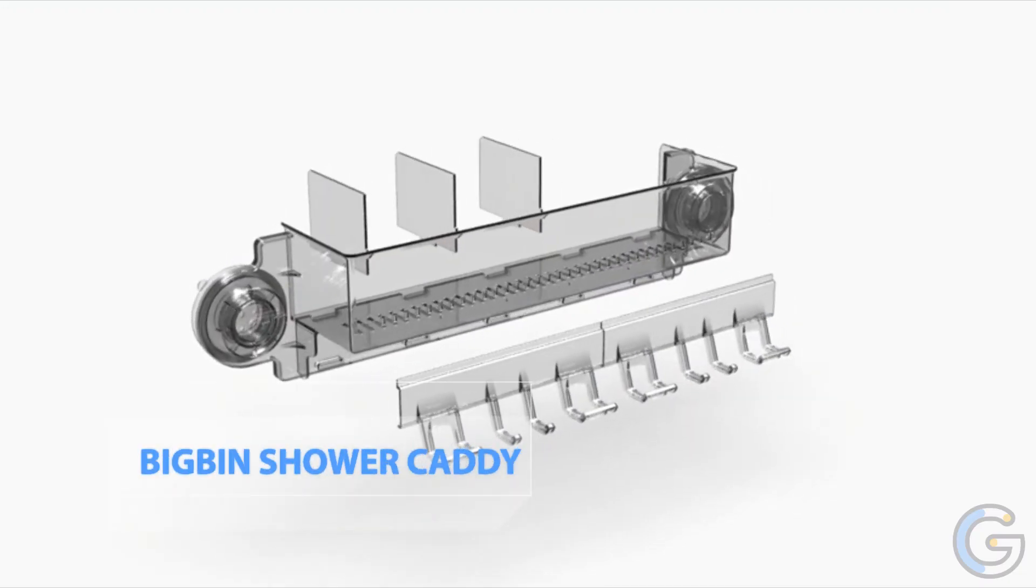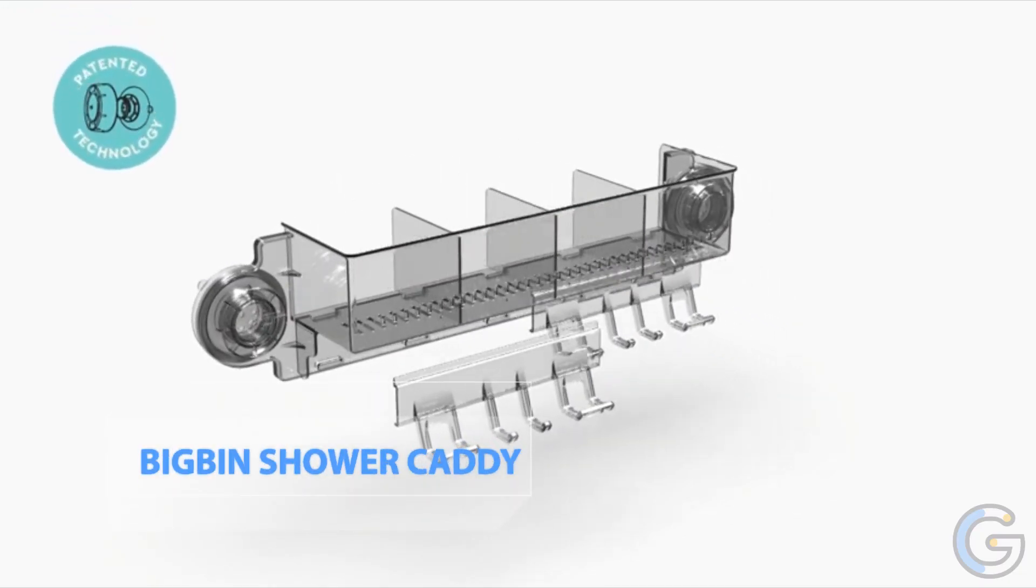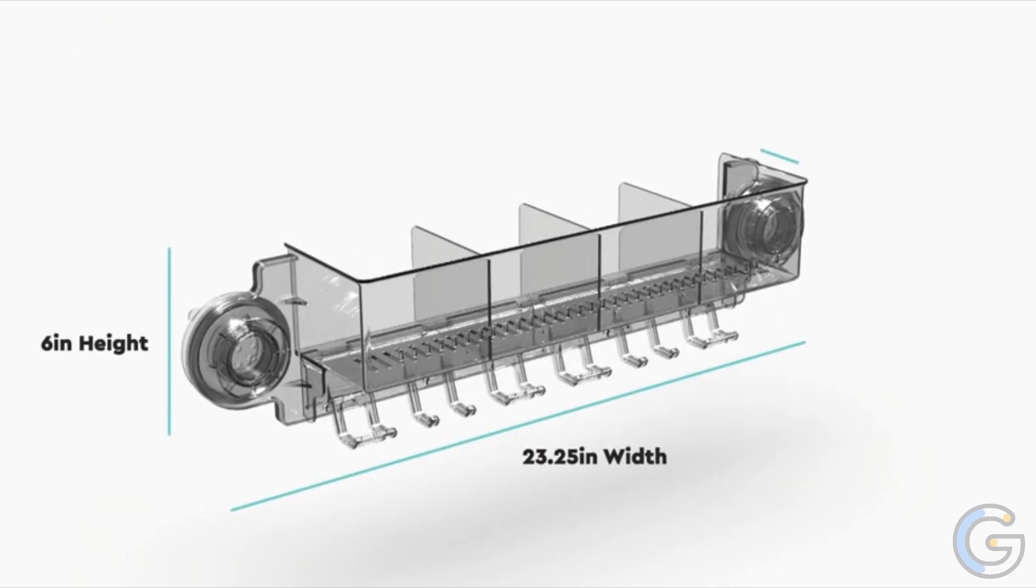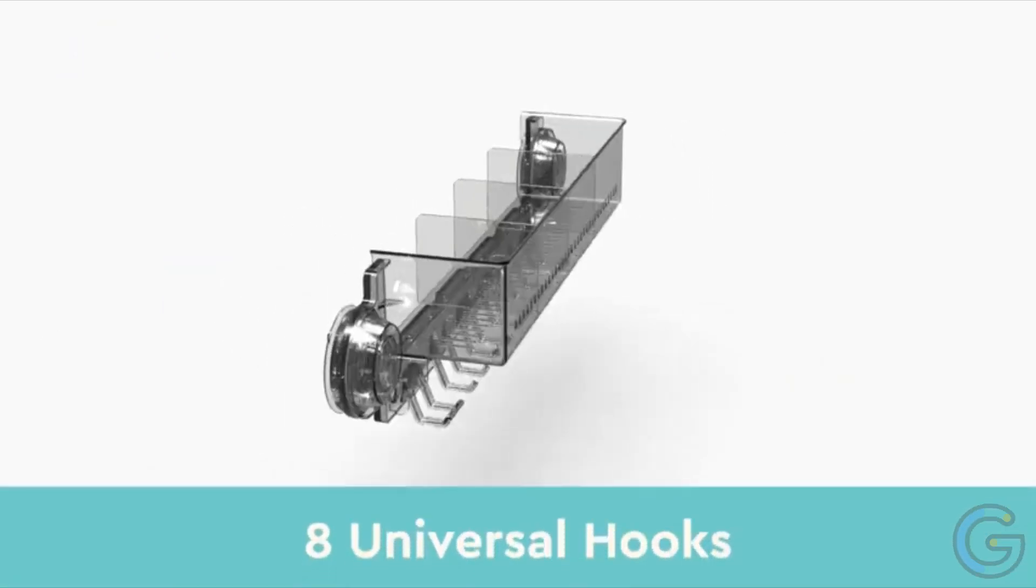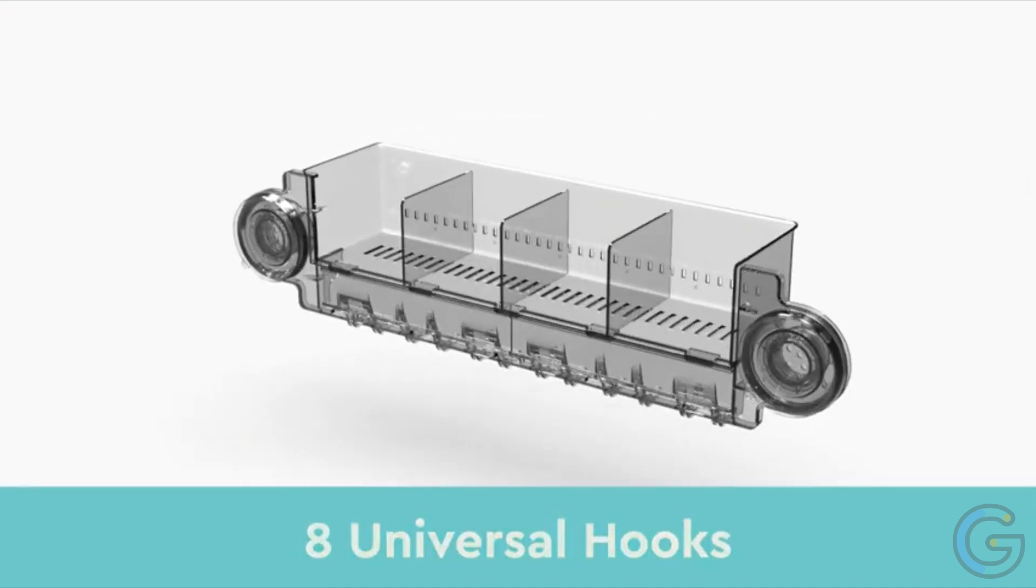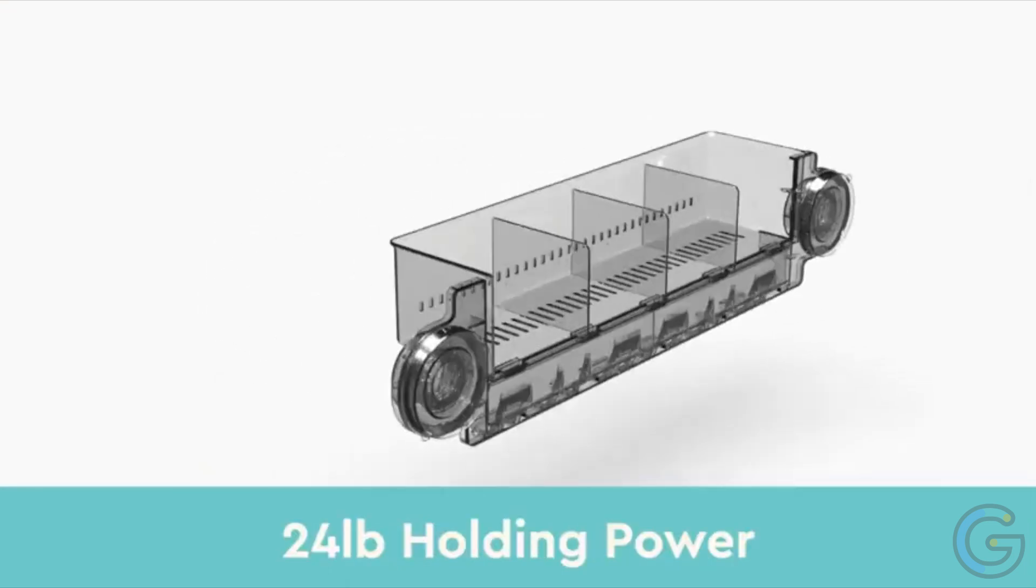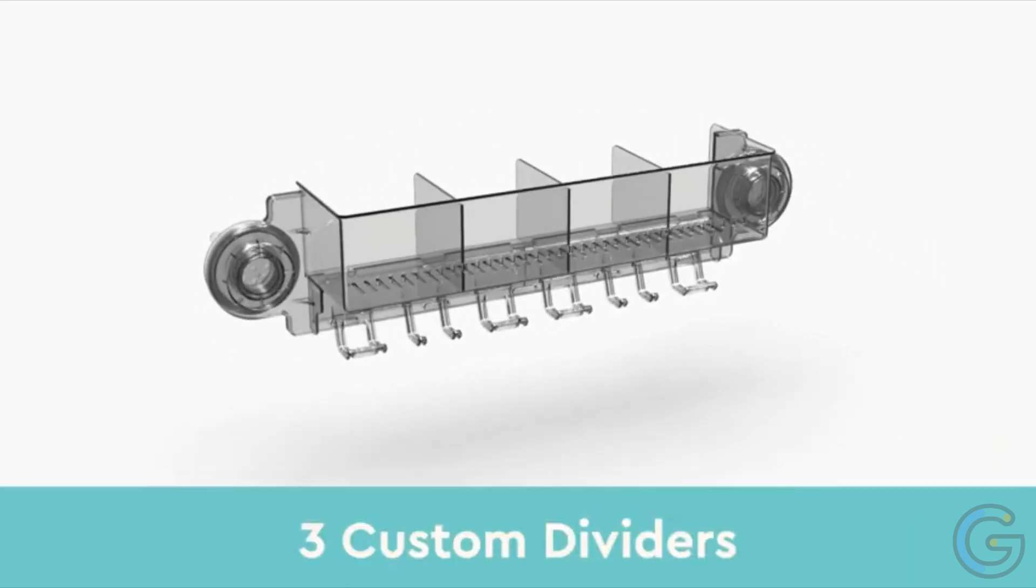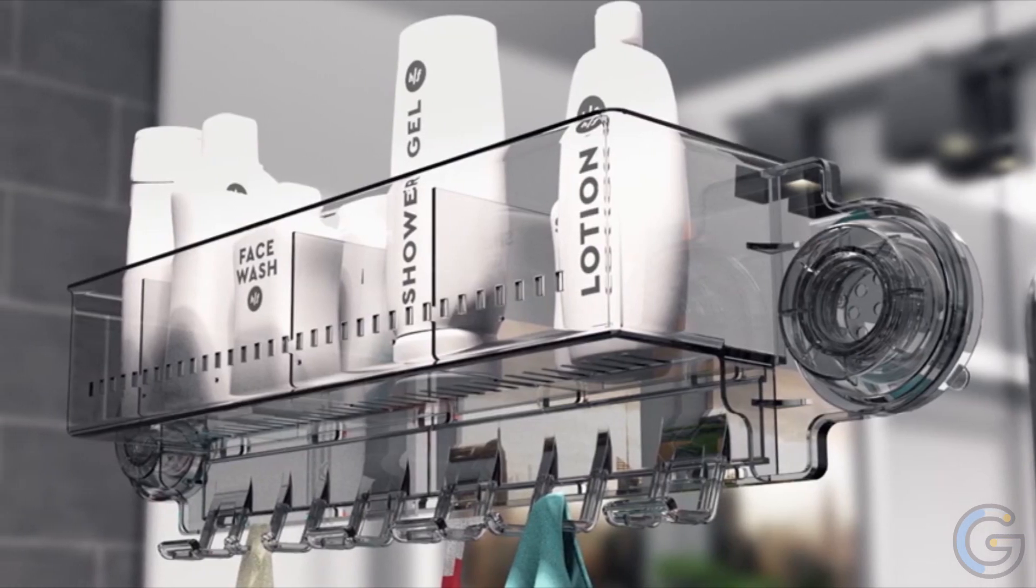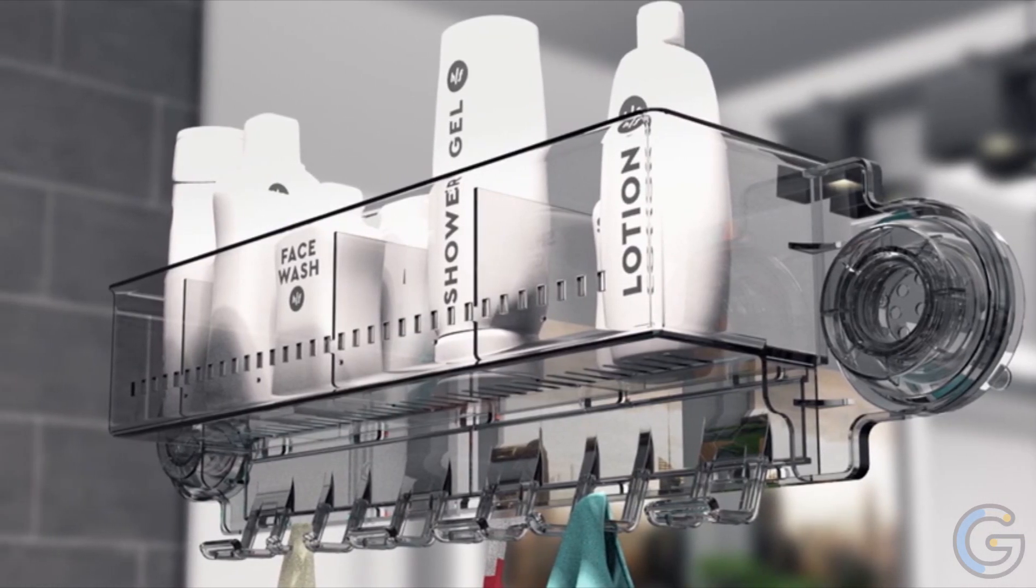The Home and Foundry Big Bin Shower Caddy. Organize all your shower essentials with the Home and Foundry Big Bin Shower Caddy. Boasting durable suction cups, it can actually support up to 24 pounds of shampoo, conditioner, and more. In fact, its design holds about 10 bottles and quickly installs with ease.